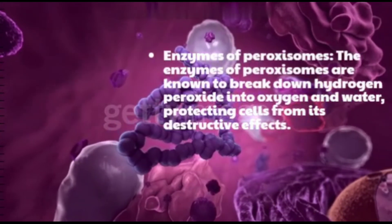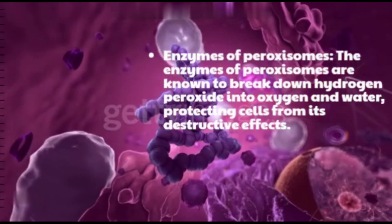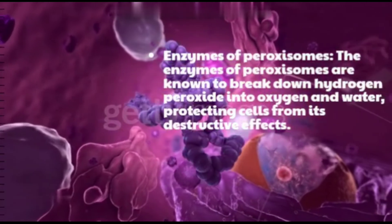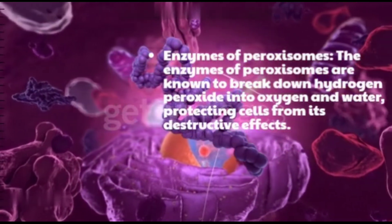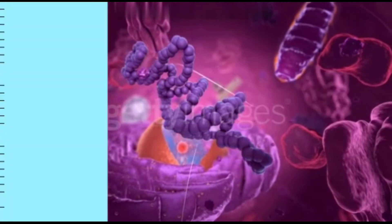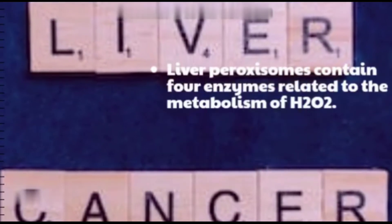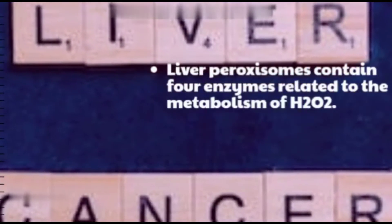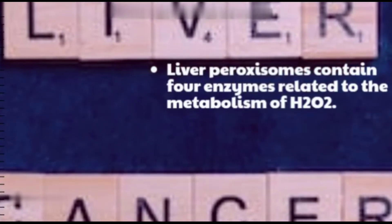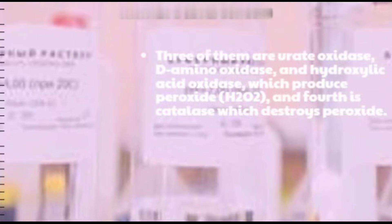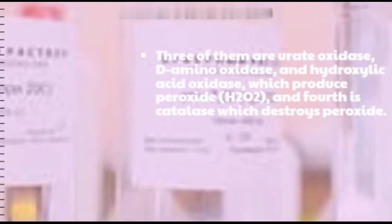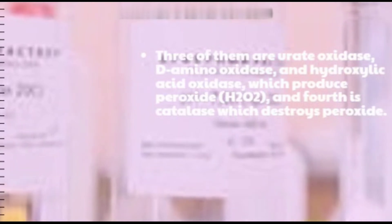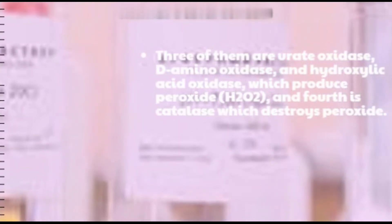Enzymes of peroxisomes: The enzymes of peroxisomes are known to break down hydrogen peroxide into oxygen and water, protecting cells from its destructive effects. Liver peroxisomes contain four enzymes related to the metabolism of H2O2. Three of them are urate oxidase, D-amino oxidase, and hydroxylic acid oxidase, which produce peroxide (H2O2), and the fourth is catalase, which destroys peroxide.